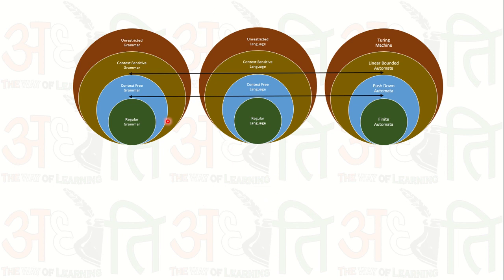Today we are going to discuss linear bounded automata, or LBA. We will take an introductory look at it, then discuss its grammar. The language generated by this grammar is simply known as context-sensitive language — it is a type 1 grammar. The topmost is simply known as unrestricted grammar, and the language generated by it is accepted by the machine simply known as a Turing machine.